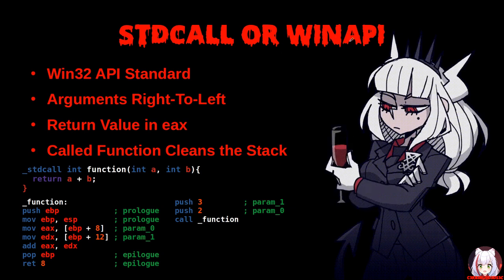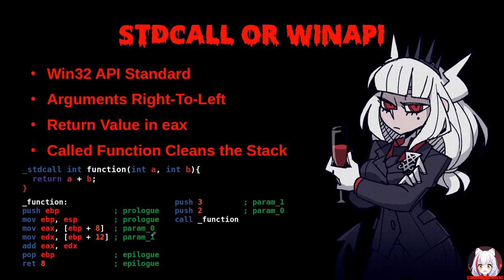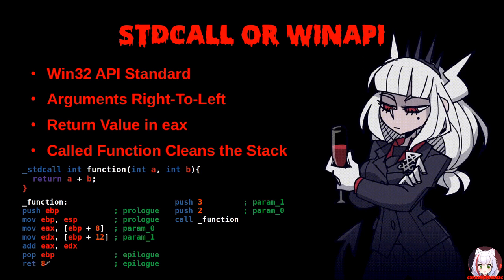STDCALL, also known as the WinAPI convention, is the Windows 32-bit API standard. Arguments are passed right to left: B (3) is pushed first, then A (2), followed by the call. Inside the function, the prologue, epilogue, and operation proceed similarly to CDECL. However, note that the return instruction uses an immediate value of 8 to clean up the stack — rather than the caller cleaning up, the callee does. We will be seeing STDCALL when calling Windows APIs, so it is very important to understand this convention for malware analysis on Windows.